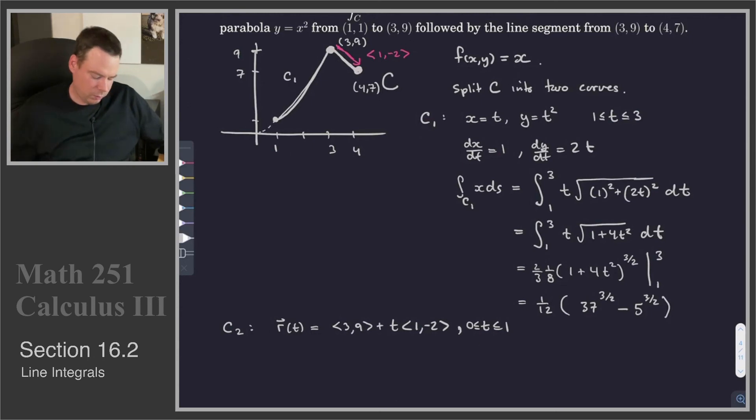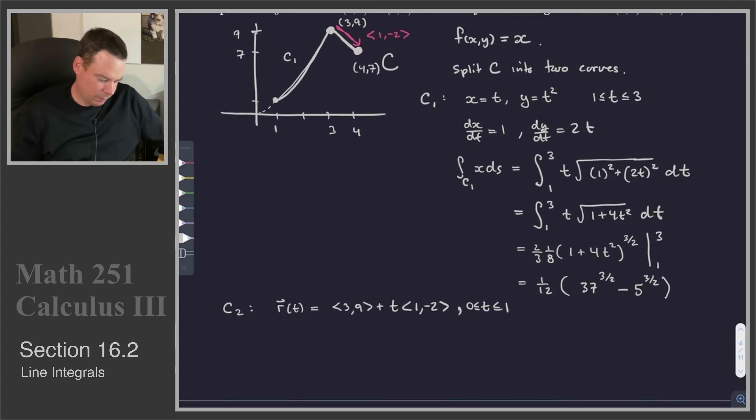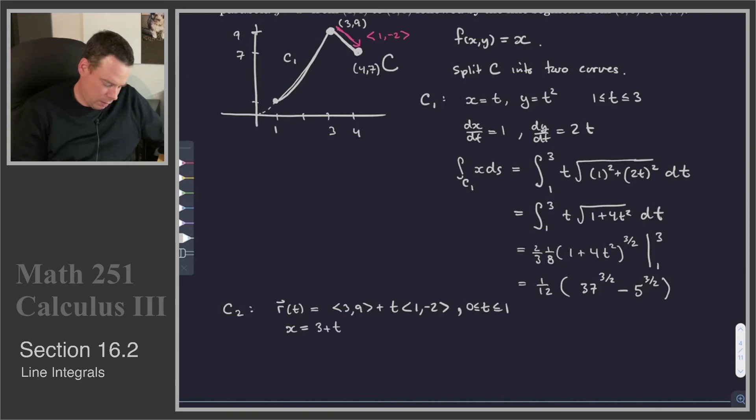So in other words, x is equal to 3+t, and y is equal to 9-2t. So dx/dt is 1, dy/dt is -2, and so our integral over C₂ of x ds is equal to the integral from 0 to 1. x is 3+t, and then we've got the square root of 1² plus (-2)², which is the same as 2², dt. Or in other words, we have √5, the integral from 0 to 1 of 3+t dt.